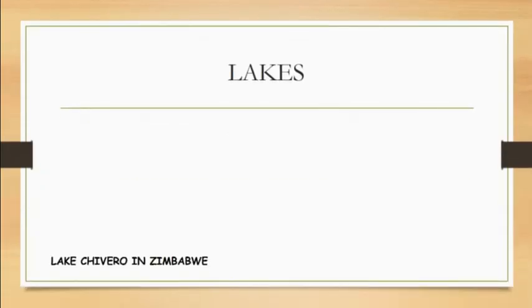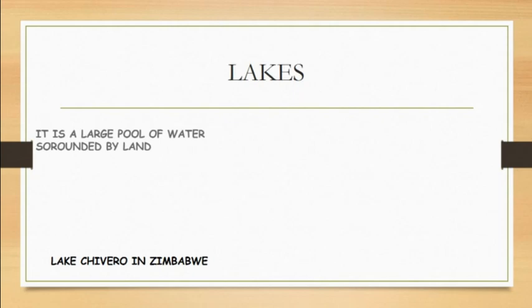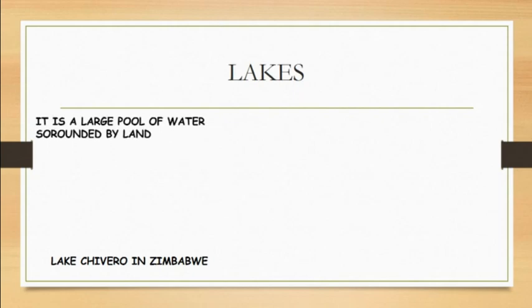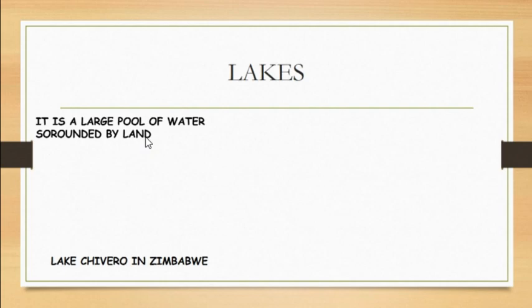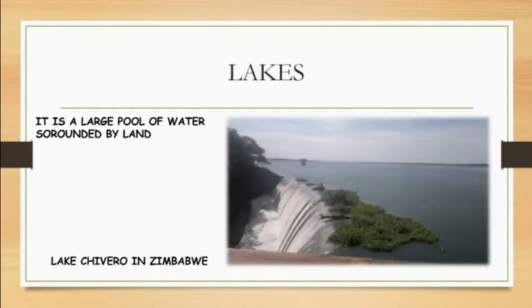We go on to lakes. Here is Lake Chivero in Zimbabwe, though there are other lakes as well. A lake is a large pool of water surrounded by land. It may also be connected to a river leading to the sea. We must also be able to differentiate between a lake and a dam.